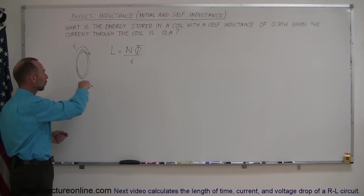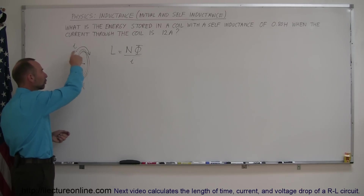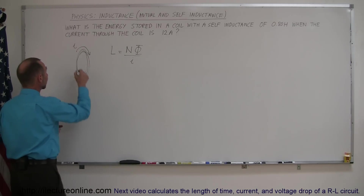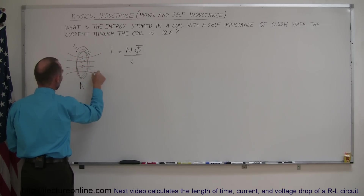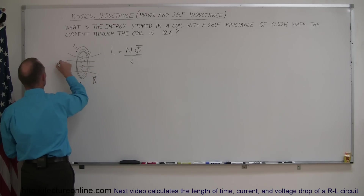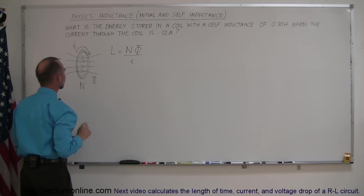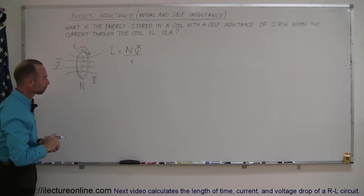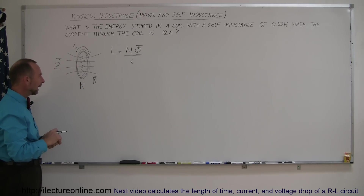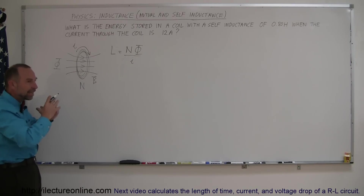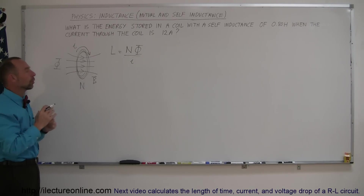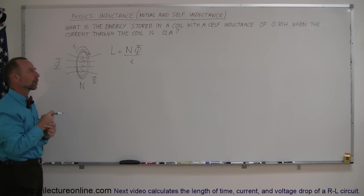If there's a certain amount of current going through the coil, there'll be a certain amount of magnetic flux through the coil. There's a magnetic field here, so there's a certain amount of magnetic flux coming through the coil. And while that is happening — while there's current going through the coil — there's energy stored in the coil. How does that work?